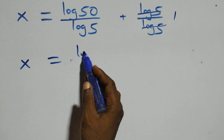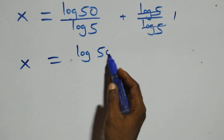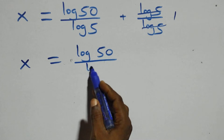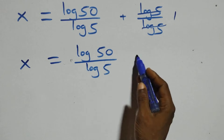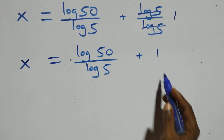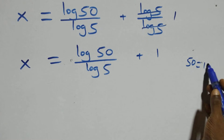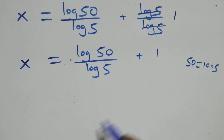One is left, so x equals log 50 over log 5 plus 1. We can write 50 as 10 times 5.